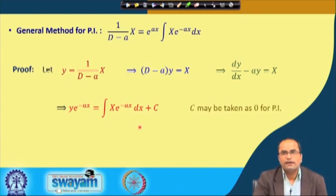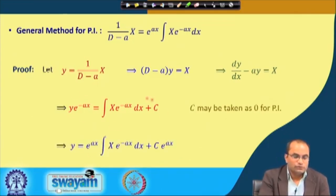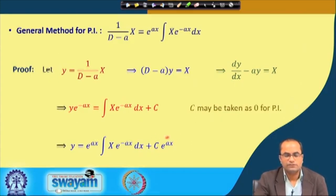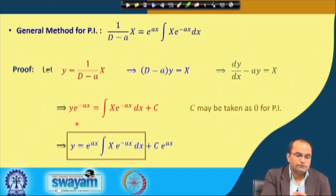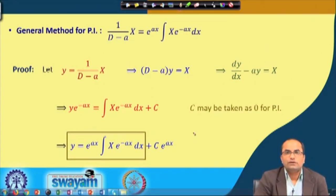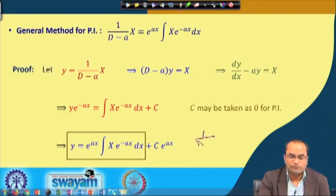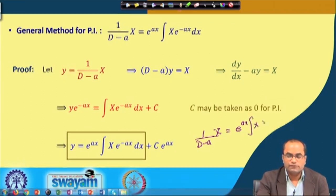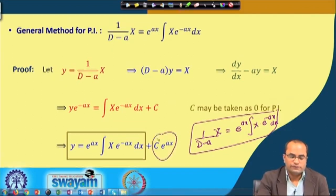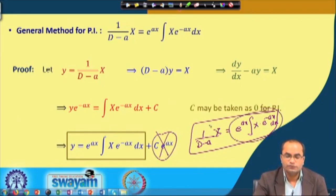Setting C = 0, the solution becomes y = e^(ax) ∫ X·e^(−ax) dx. This is the important result: when we apply [1/(D−a)] on a function X, the value is e^(ax) ∫ X·e^(−ax) dx. As a simple special case when a = 0, [1/D] operated on X is simply ∫ X dx, which is expected since D is the differential operator and 1/D is the integral operator.